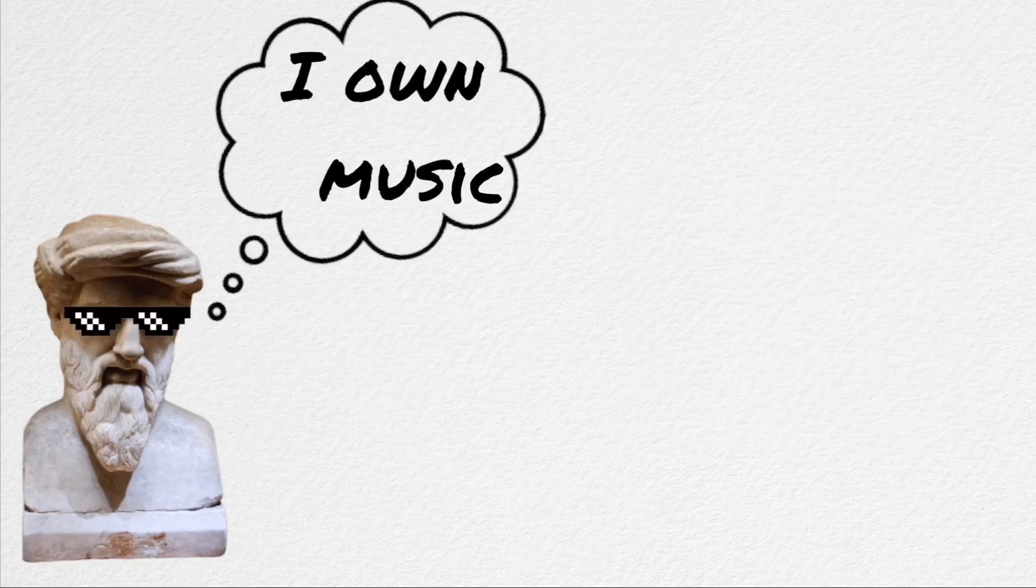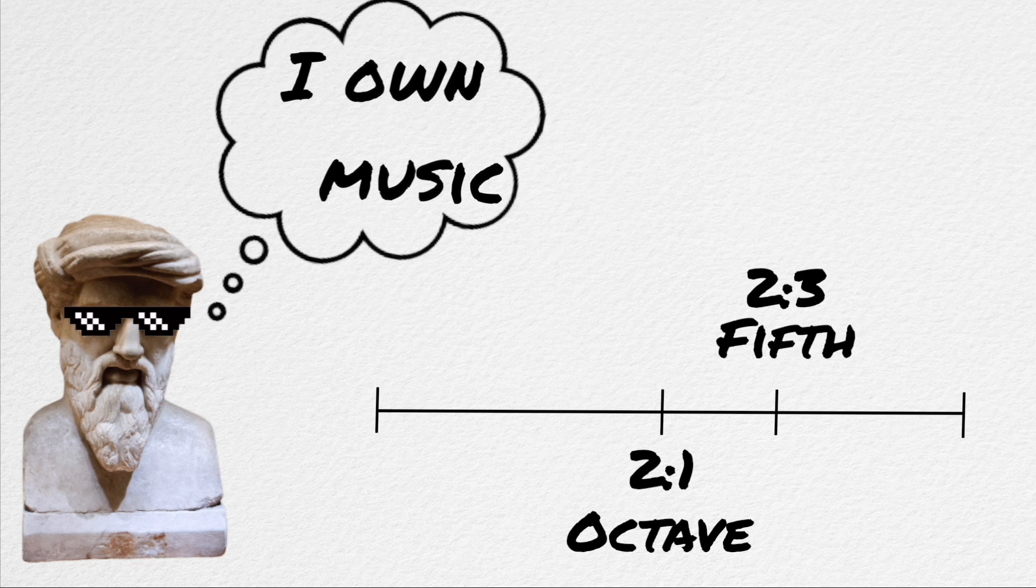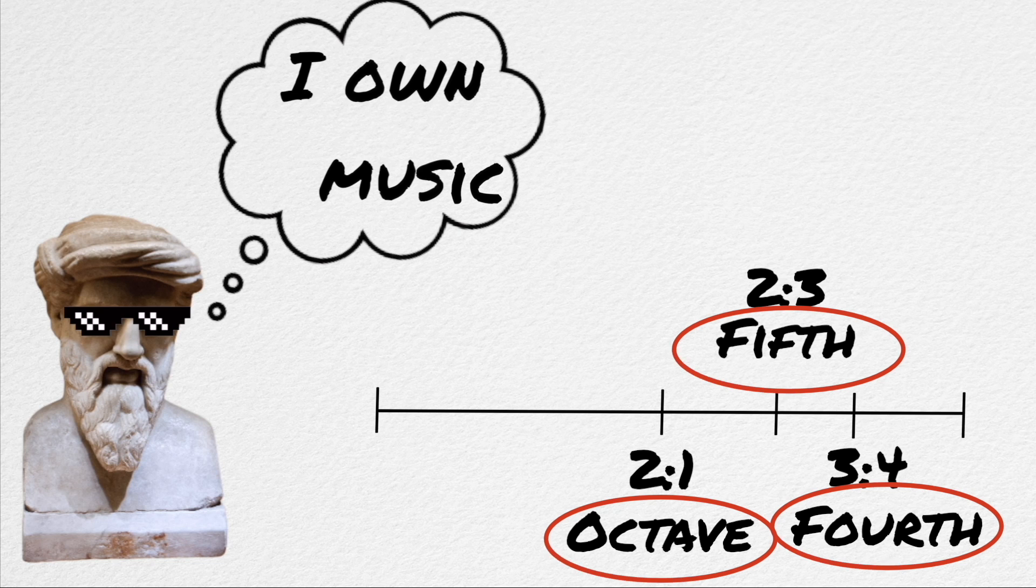Pythagoras, who gets most of the credit for the discovery of intervals, discovered them through divisions of strings. He found that dividing strings into certain ratios, 2 over 1, 3 over 2, 4 over 3, etc., produced sounds that were higher than the given fundamental of the string, and gave names to these specific intervals.